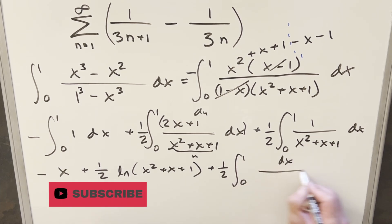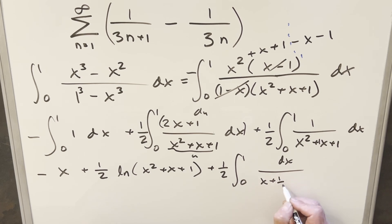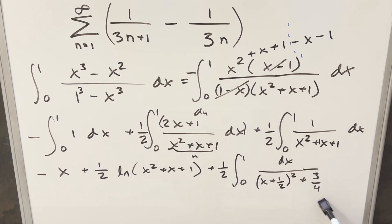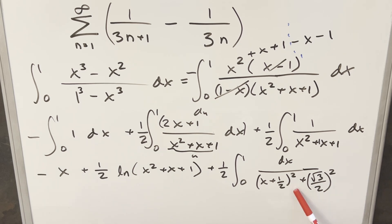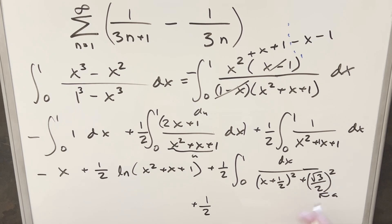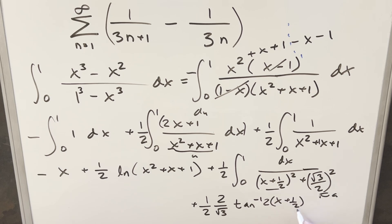For the remaining integral with 1 over (x squared plus x plus 1), I complete the square in the denominator. Writing x squared plus x plus 1 as (x plus 1/2) squared plus 3/4, and noting that 3/4 equals (√3/2) squared, this is exactly in the arctan form. Using the arctan integral formula with a equals √3/2, and a factor of 1/2 out front, the result is (1/2) times (2/√3) times arctan of (x plus 1/2) all divided by (√3/2), evaluated from 0 to 1.